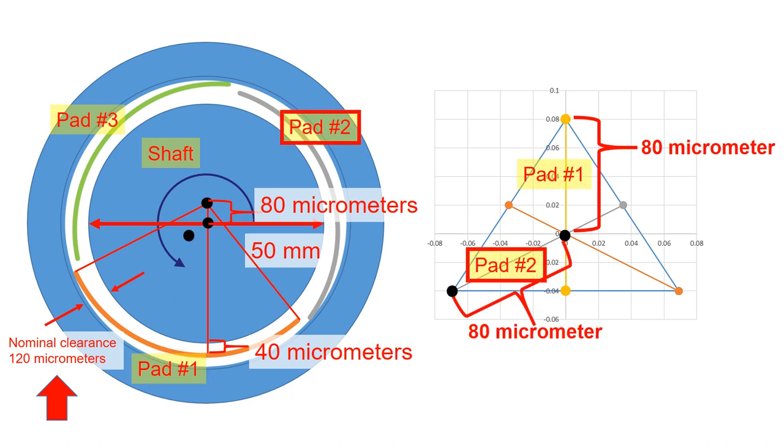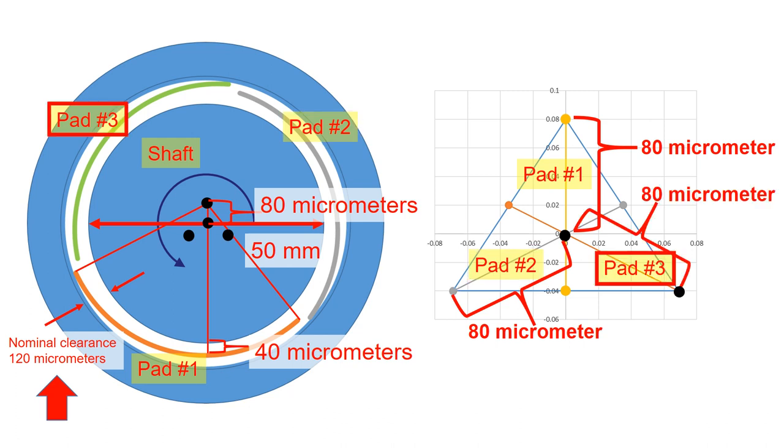Pad number two is also preloaded by 80 micrometers, and pad number three as well. Again, this preloaded pad geometry makes the wedge effect more effective.